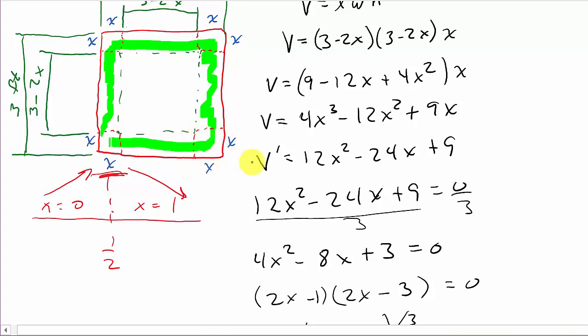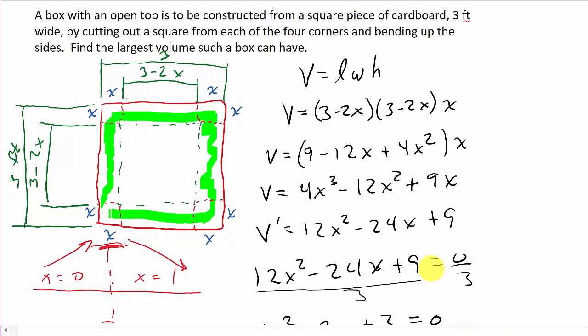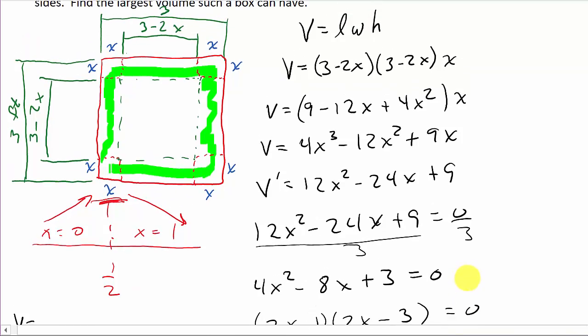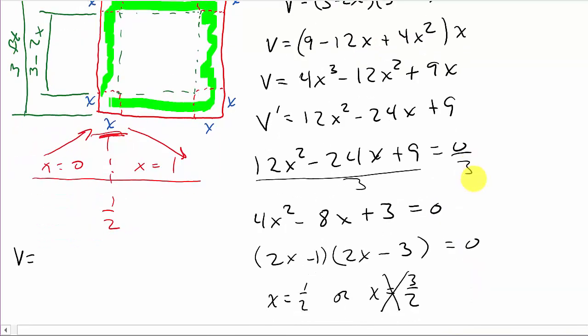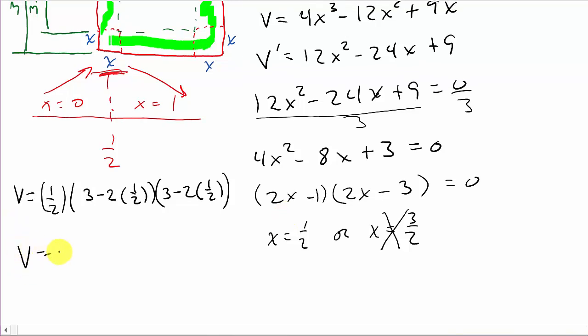Because remember, we're in feet. Well, they want to know, find the largest volume. So the volume, well, we take the 1 half and we can plug it into here. So that's going to be, let's see, 1 half, that's x times 3 minus 2 times 1 half times 3 minus 2 times 1 half. Actually, I could just square that, couldn't I? And so then I get the volume is 2 cubic feet.